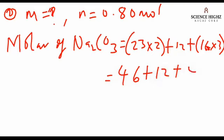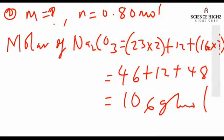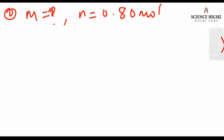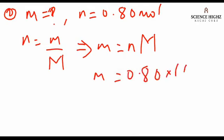Now we put it into our formula. We are solving for mass, so we make mass the subject. The general formula is n equals small m over capital M, so mass equals n multiplied by molar mass. We get m equals 0.80 times 106, so our mass is 84.80 grams.